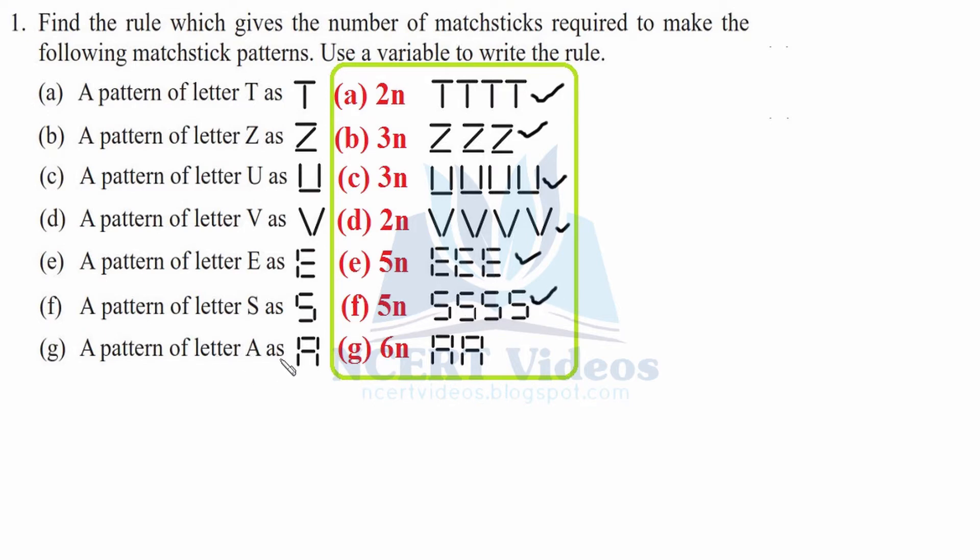For letter A, we count 1, 2, 3, 4, 5, 6. So we will use 6 matchsticks for this. If we want to make 2, we will need 6 times 2, which is 12. So this is how you do your question number first.